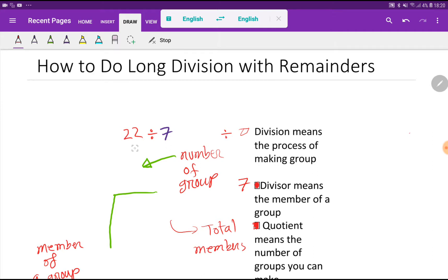Look at here. If I take an example like this: 22 divided by 7. What do you mean by division? Division means the process of making groups. So if I express this problem like this.